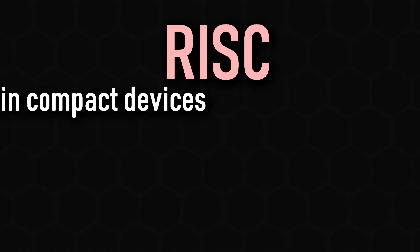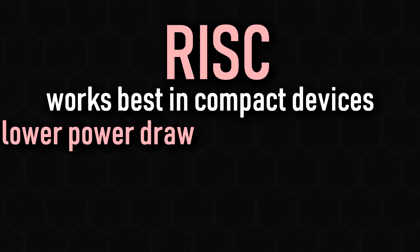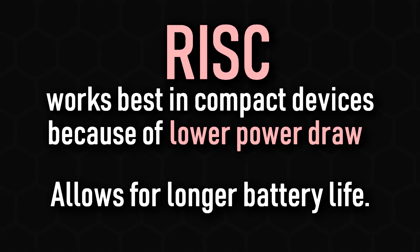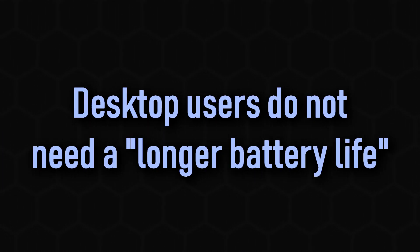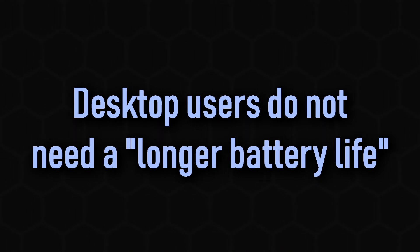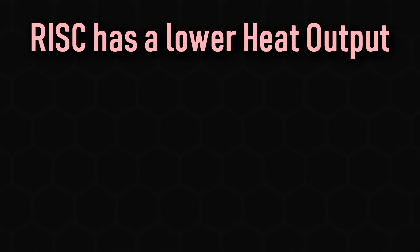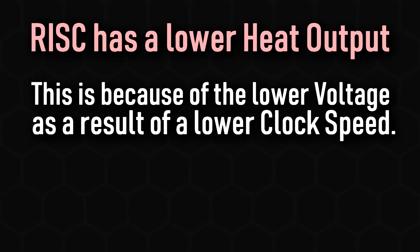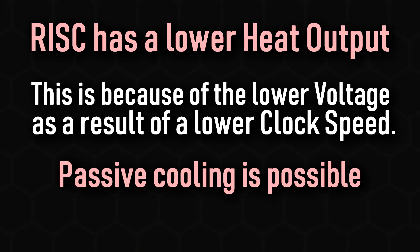RISC is best suited for devices such as smartphones because of the aforementioned lower power draw, as the typical mobile phone user would want their phone to last a full day on a full charge, while users of a desktop or server don't really have this expectation. The same could be said for heat output — the lower clock speed associated with RISC and subsequently lower voltage means it produces less heat, which could easily be dissipated by the metal casing of a phone.